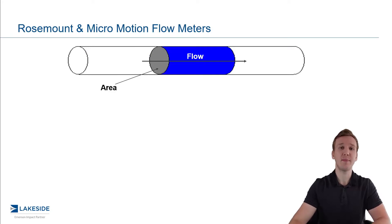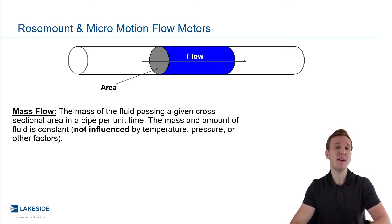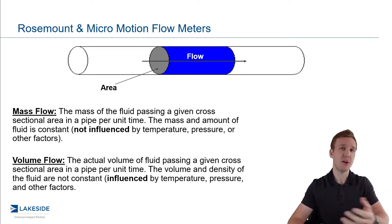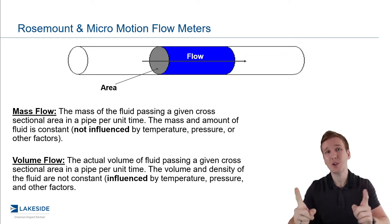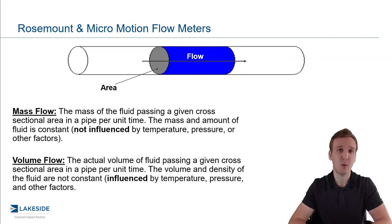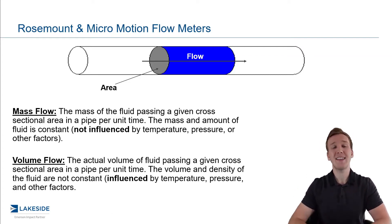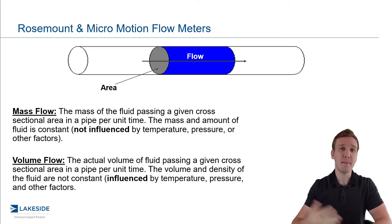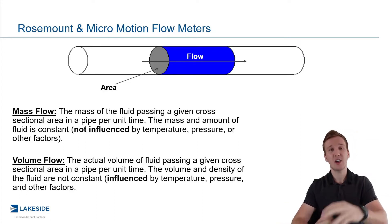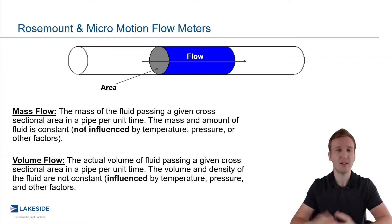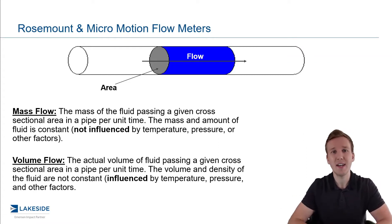First of all, what is a flow rate? There are two common definitions that you'll see: a mass flow rate and a volumetric flow rate. These look very similar, but there's a very important difference. In essence, both are saying this is a way for us to measure the amount of fluid traveling in a given cross-sectional area of pipe in some unit of time. And this unit of time can be minutes, hours, years — you name it.